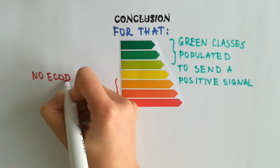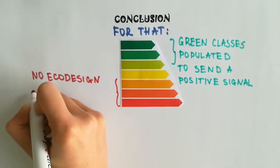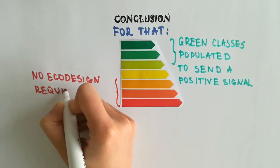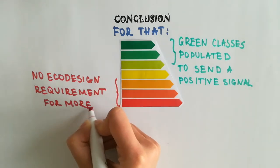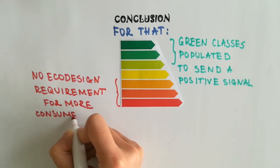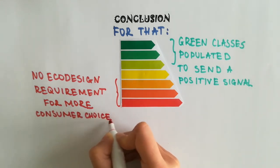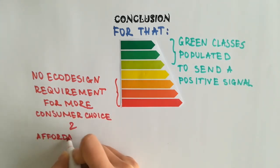Second, we should avoid more stringent eco-design requirements. They would make the most affordable dishwashers disappear from the shops. Instead, we should give more choice to consumers, especially to those with lower incomes that would then be able to find products with more affordable prices.